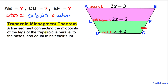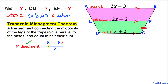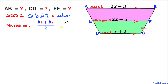Let's recall the trapezoid mid segment theorem. According to this theorem, a line segment connecting the midpoints of the legs of a trapezoid is parallel to the bases and equal to half their sum. Therefore all these lines are parallel, and here's the mid segment formula: mid segment = (Base 1 + Base 2) / 2.